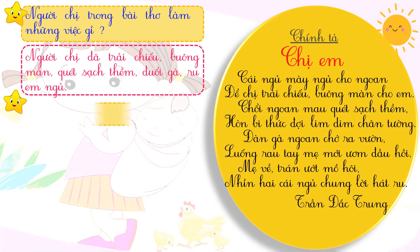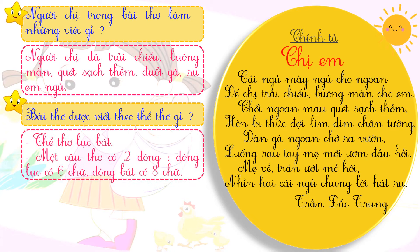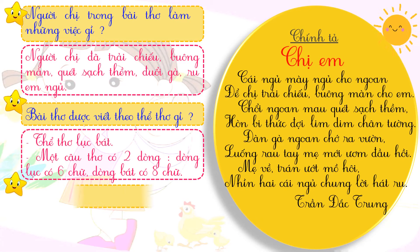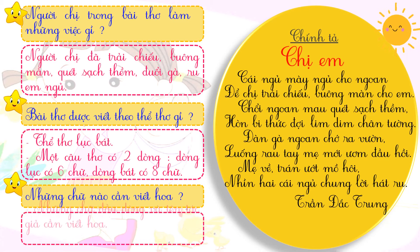Có bạn nào biết bài thơ này được viết theo thể thơ gì không? Đó là thể thơ lục bát: một câu thơ có hai dòng, dòng lục có sáu chữ và dòng bát có tám chữ. Vậy, những chữ nào ta cần viết hoa? Những chữ ta cần viết hoa là những chữ đầu dòng và tên của tác giả.